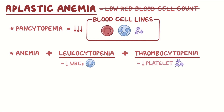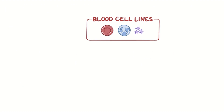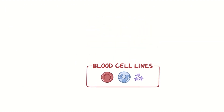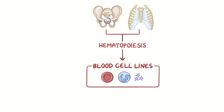This condition takes many forms, ranging from mild to severe, depending on the cause. Red blood cells are produced in the bones of the body, mainly in the bones of the pelvis, ribs, and sternum, through a process called hematopoiesis.